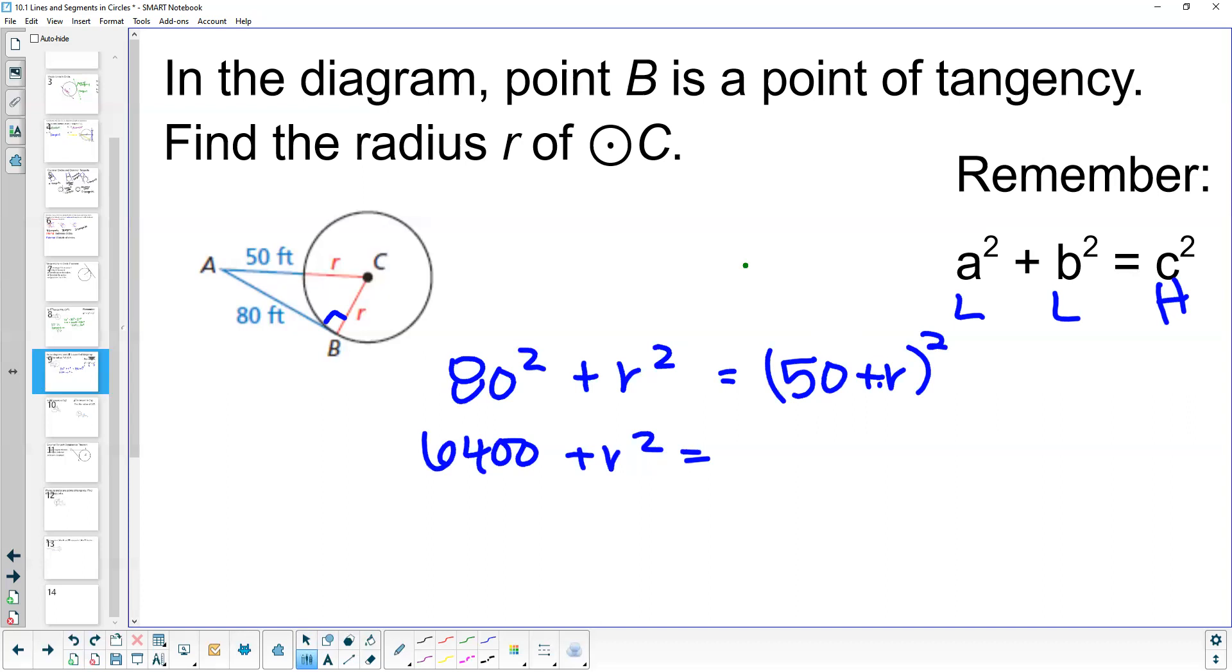Now we need to expand this. When we expand (50 + r)², we cannot just distribute r² in. We have to FOIL this. 50² gives us 2,500, plus 100r, plus r². This tells us we need to solve for r using factoring, completing the square, or the quadratic formula, unless we can get rid of something, which we can here.